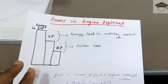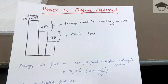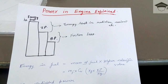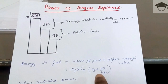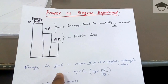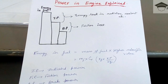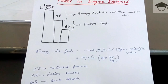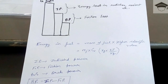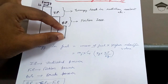The energy in the fuel can be expressed as mass of fuel multiplied by its calorific value — that is, mf into CV — and the unit will be kilojoules. IP is indicated power, FP is friction power, and BP is brake power. The relationship to remember is: IP minus FP equals BP.